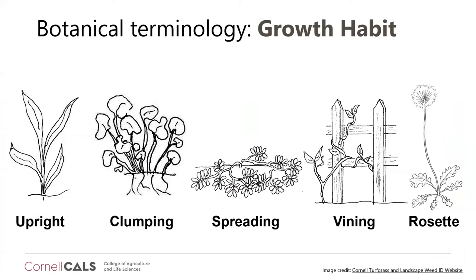Next we'll talk about growth habits. We'll focus on five: upright — plants that grow mostly upright, also referred to as erect in field guides; clumping — plants with a mound-like habit, roughly as wide as they are tall; spreading, also called prostrate — plants with a horizontal spreading growth habit; vines — which climb and require structure for support, such as poison ivy; and rosettes — roughly circular clusters of leaves that remain close to the ground surface.